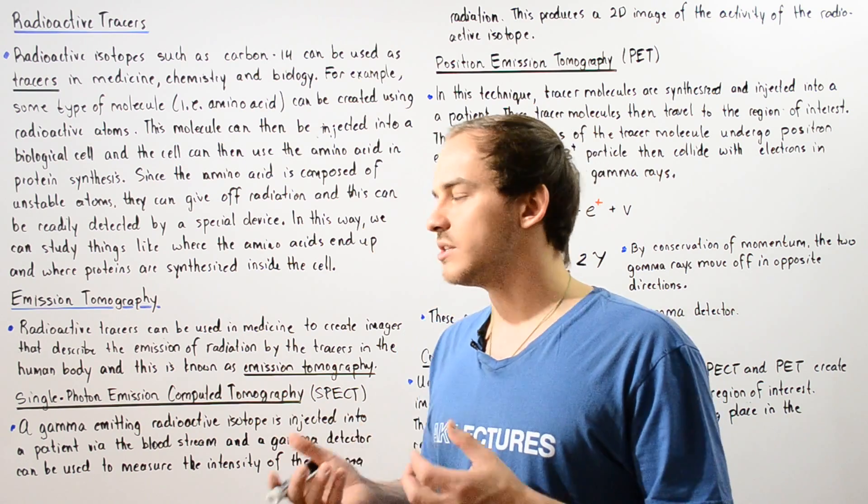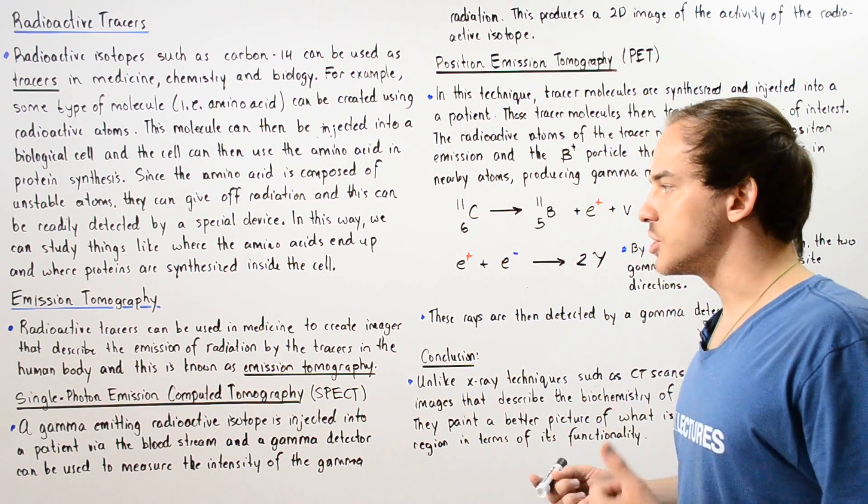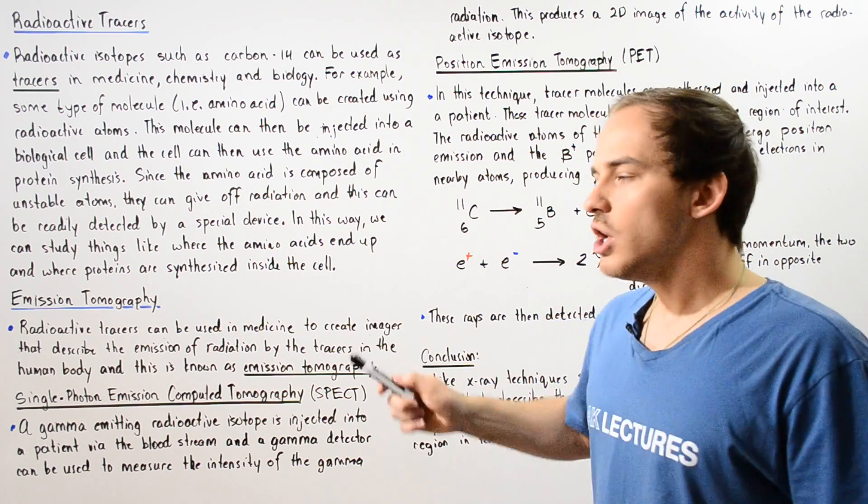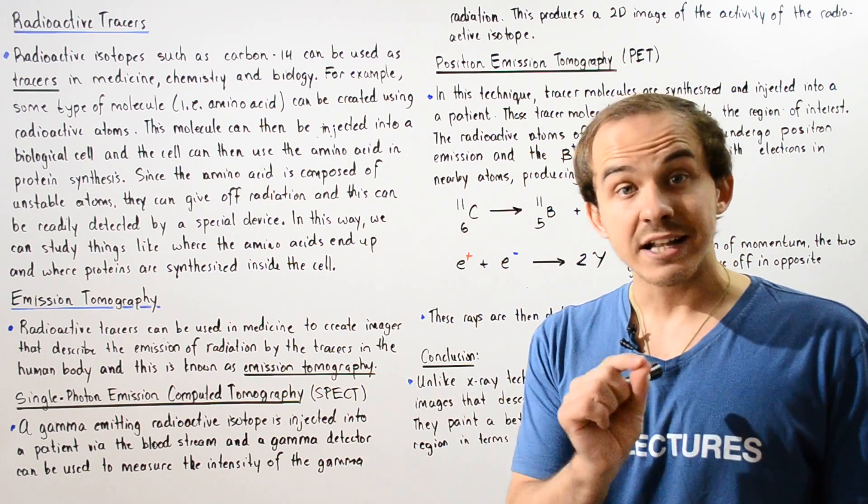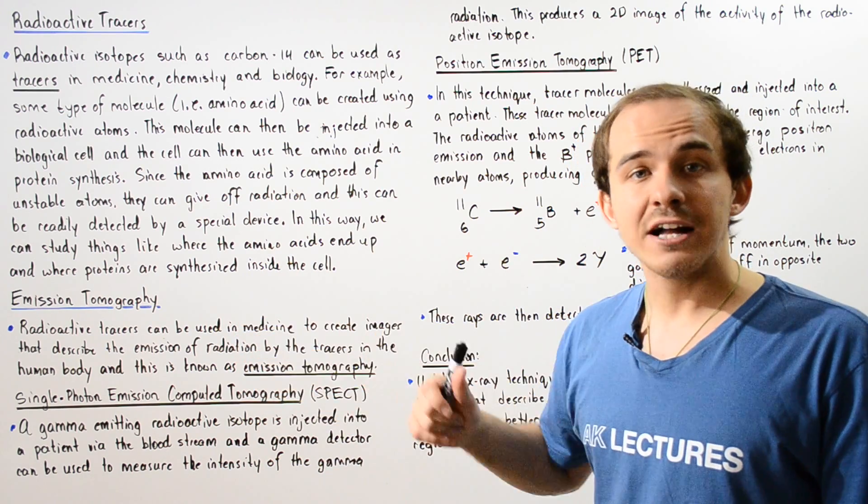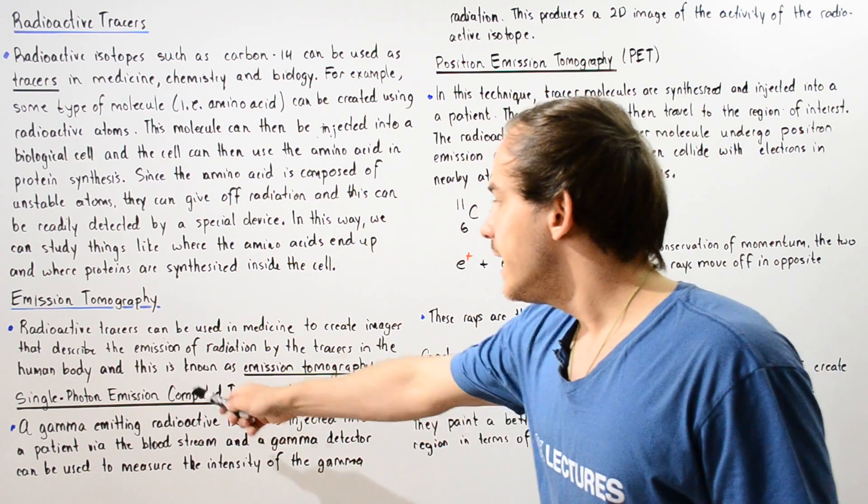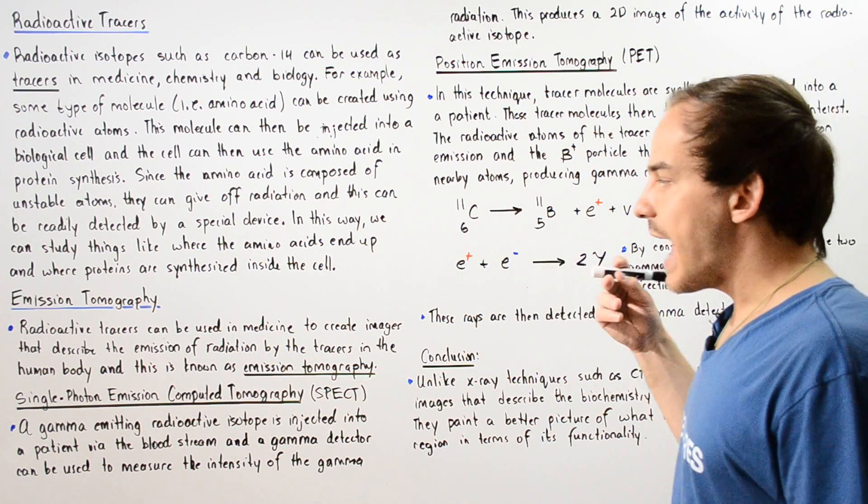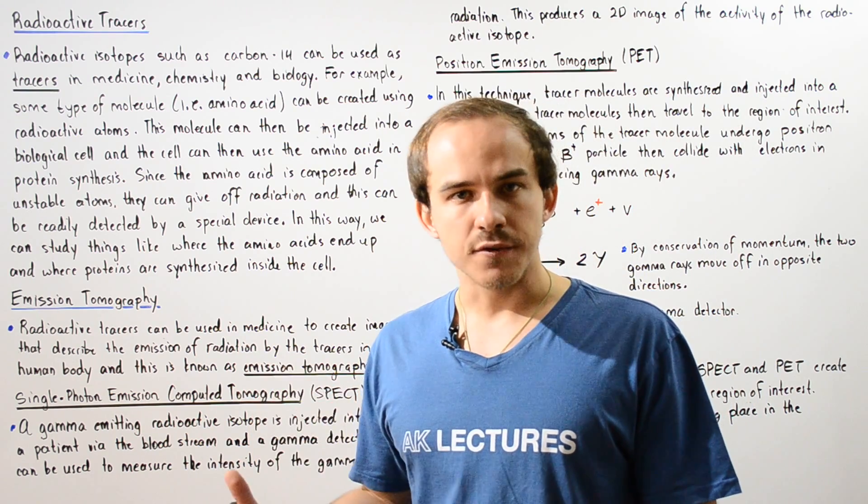Radioactive tracers can be used in medicine to create images that describe the biological activity via emission of radiation by those tracers. This is known as emission tomography.